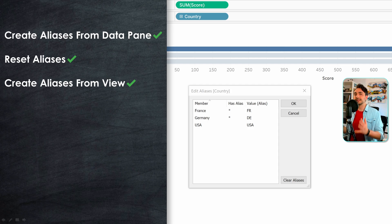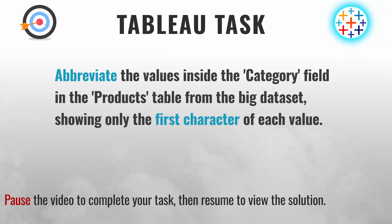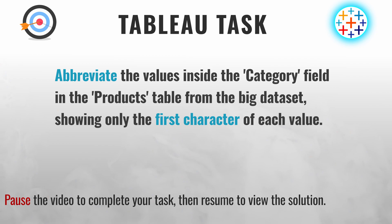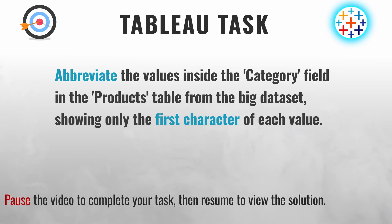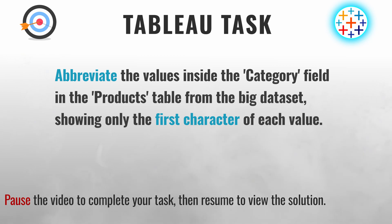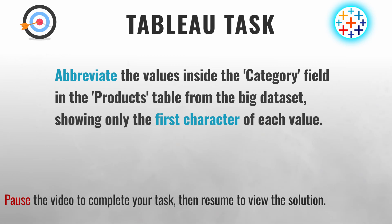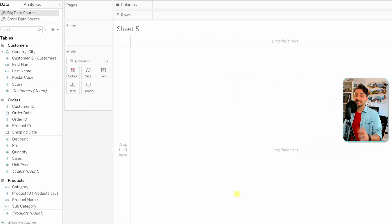Aliases are a great way to clean up and change values directly in Tableau without going back to the original datasets. Now we have a Tableau task for you: abbreviate the values inside the field 'category' in the table 'products' from the big dataset, showing only the first character from each value. You can pause the video now to do the task and resume once you're done.